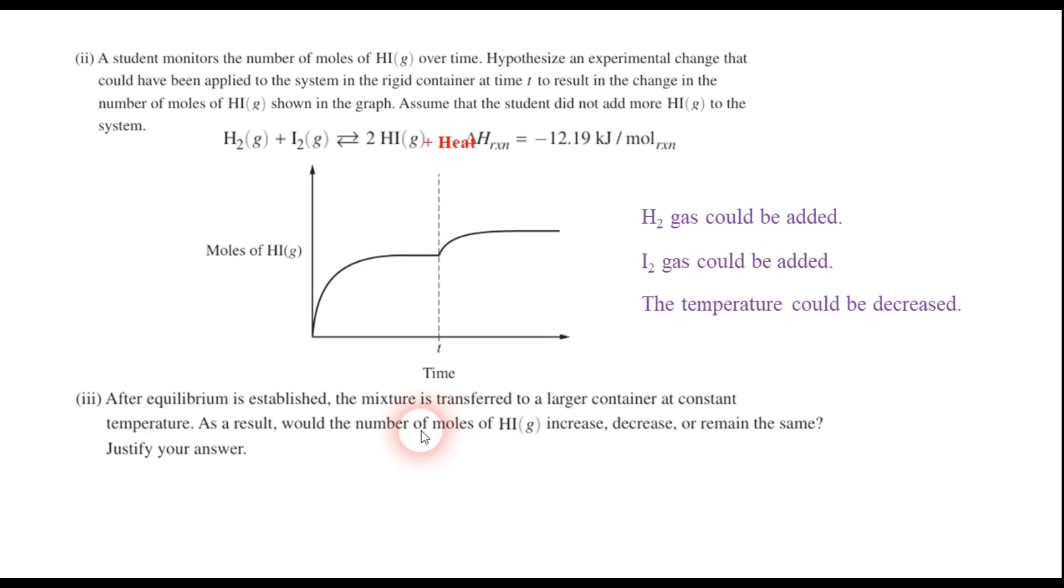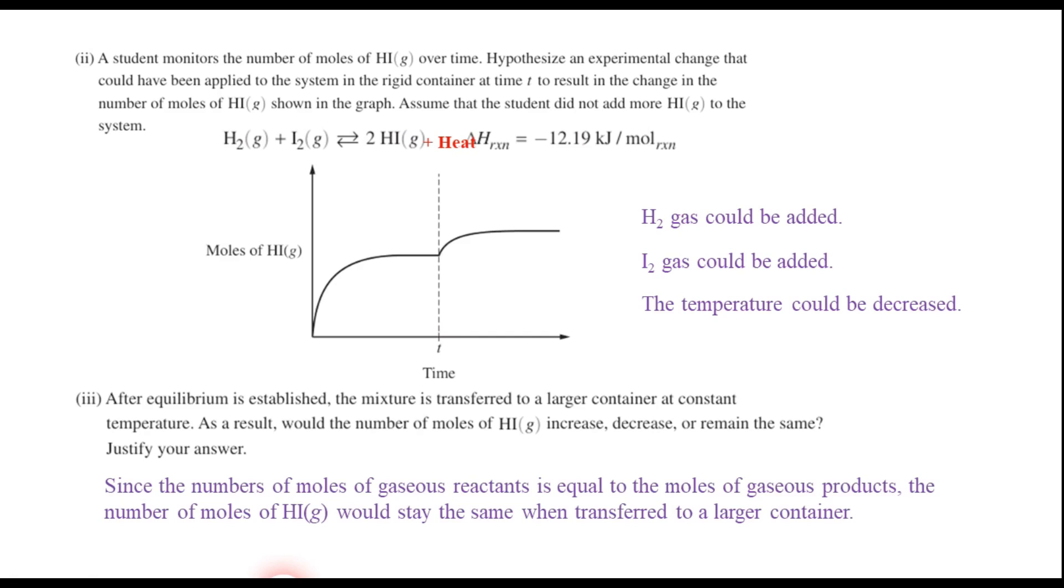Now, part three says after equilibrium is established, the mixture is transferred to a larger container at constant temperature. As a result, would the number of moles of HI increase, decrease, or remain the same and justify your answer? Well, normally, if we transfer the mixture to a larger container at constant temperature, the equilibrium will shift toward whichever side has more moles of gas. Well, if we look at the equation up here, we see that there's a tie. There are two moles of gas on both sides, which tells us that since it's a tie, there's not going to be a change. And so since the numbers of moles of gaseous reactants is equal to the moles of gaseous products, the number of moles of HI would stay the same in this case when transferred to a larger container.